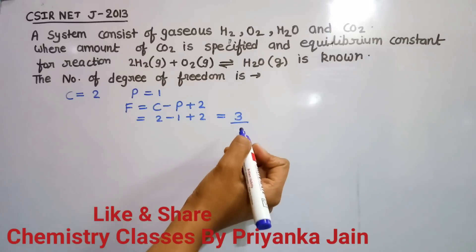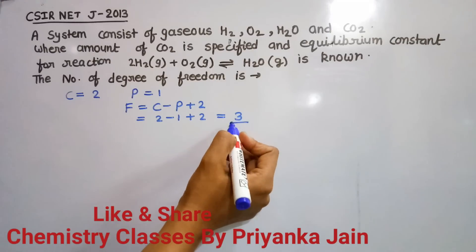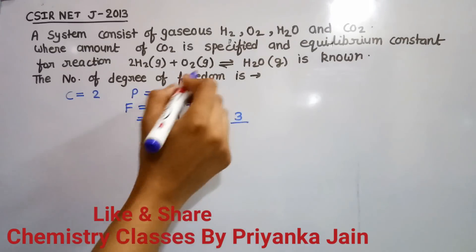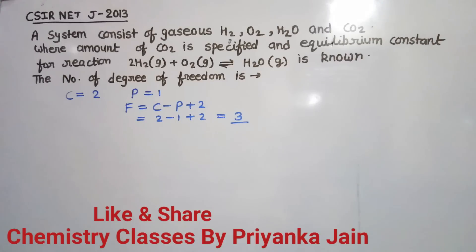So three variables must be specified to define this system. This is all about the phase rule. In our next video, we will see some more things about phase equilibrium and questions related to the NET and GATE exams. Thank you.